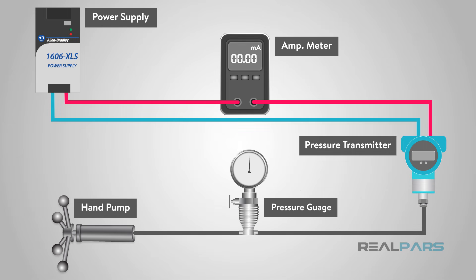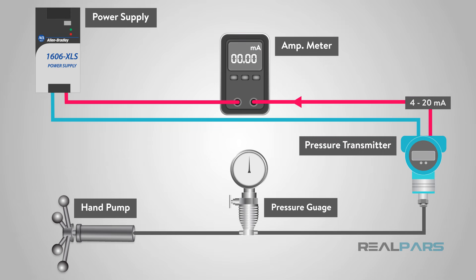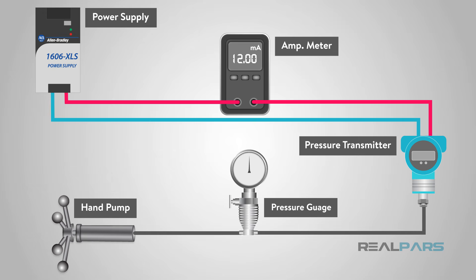To calibrate, we need a very accurate process simulator — in this case, a pressure supply connected to the process side of the transmitter. A current meter is attached to the output to measure the transmitter's 4 to 20 milliamps output. Ideally, a National Institute for Standards and Testing calibrated simulator and current meter are used. In practice, we can use very accurate process meters and pressure input modules.